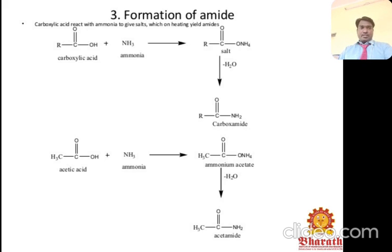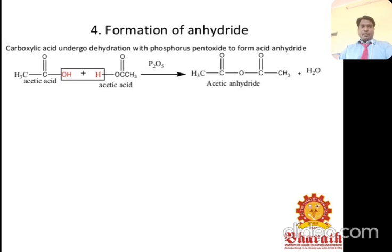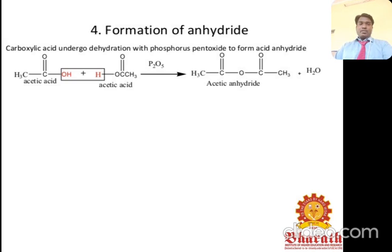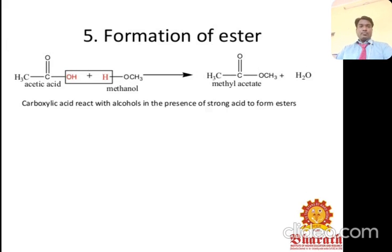Formation of anhydride: carboxylic acid undergoes dehydration with phosphoric pentoxide (P₂O₅) to form the acid anhydride. Two moles of acetic acid react in the presence of P₂O₅; removal of water gives acetic anhydride. Formation of ester: carboxylic acid reacts with alcohol in the presence of a strong acid to form esters.